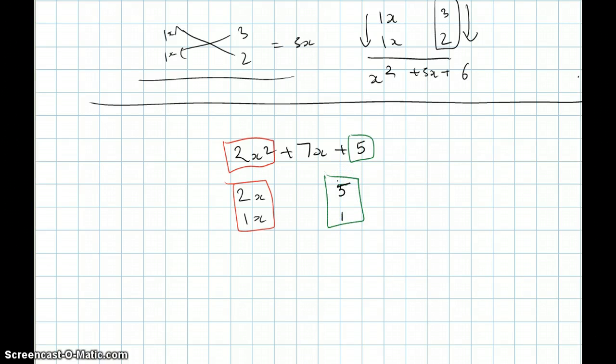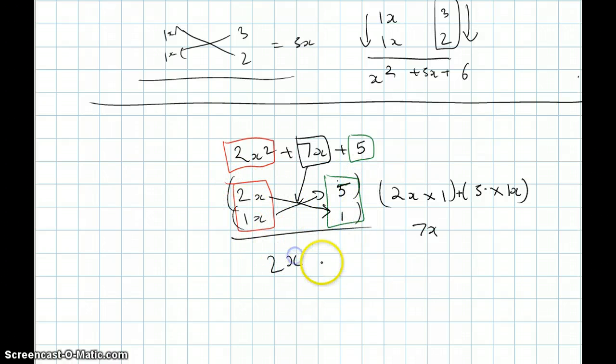And as you can see, when we define 7x, we reduce 2x times 1 plus 5 times 1x. And what does that give us? Well, that gives us 7x. So, we got this too.